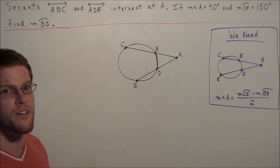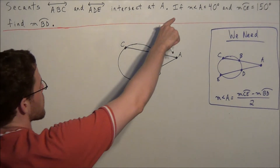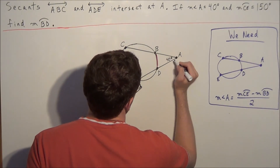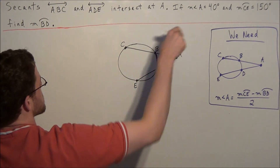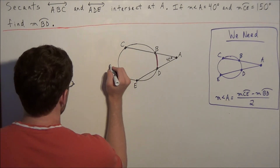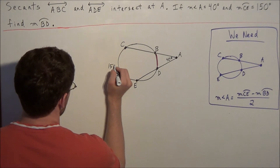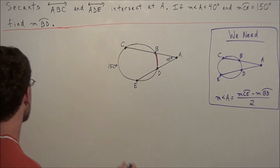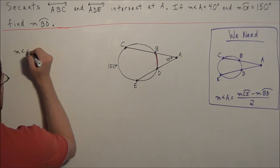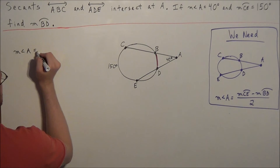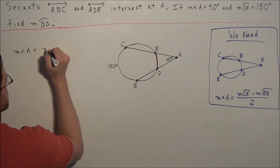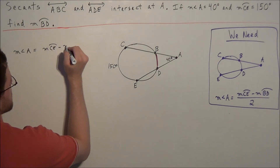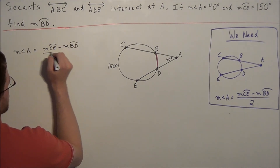The first thing we want to do is label the information that was given to us. We know that the measure of angle A is equal to 40 degrees, and we also know that the measure of arc CE is equal to 150 degrees. So what this allows us to do is set up the equation: the measure of angle A is equal to the measure of arc CE minus the measure of arc BD, divided by 2.